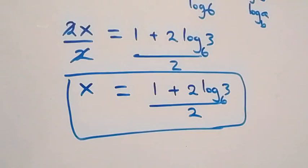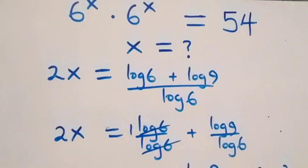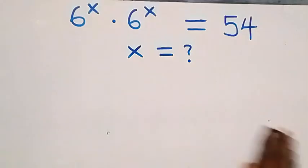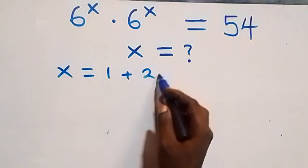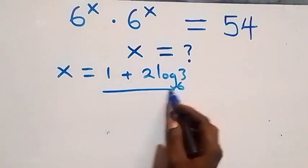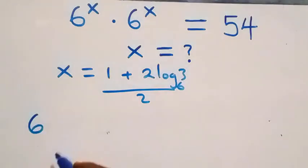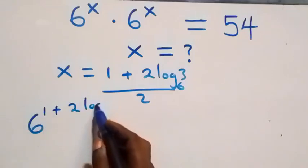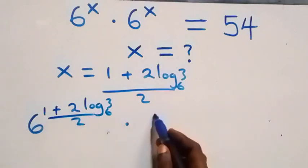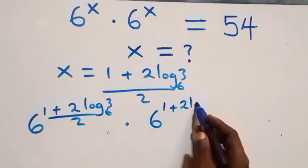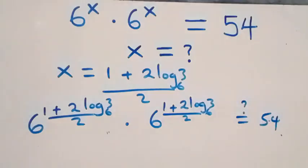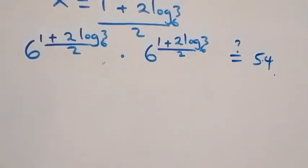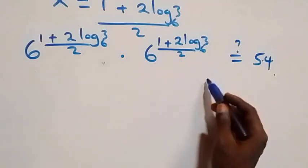Now let's substitute the value of x to check if it satisfies the given problem. With x equals to (1 plus 2 log₆3) over 2, we have 6 raised to power (1 plus 2 log₆3)/2 times 6 raised to power (1 plus 2 log₆3)/2 equals 54. Since we have the same base multiplying, we add the exponents, giving 6 raised to power 2 times (1 plus 2 log₆3)/2.